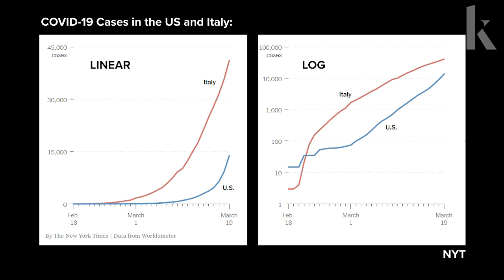Log scale reveals a slight leveling off of cases in Italy, while in the U.S., cases continue to rise — a distinction that's imperceptible from the linear graph. A drawback to looking at log scale, however, is that it can obscure the absolute value, in this case the true human toll.